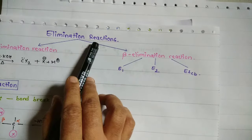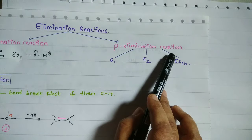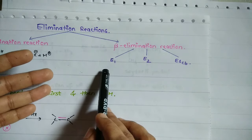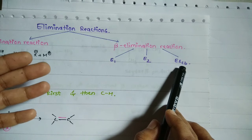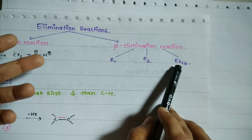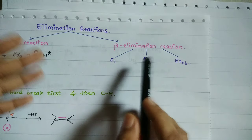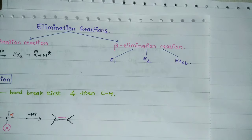When we are dealing with elimination reactions, specifically beta elimination, it will be classified into mainly three parts: E1 reaction, E2 reaction, and E1 conjugate base reaction. All three types totally depend upon their mechanism path, and to differentiate E1, E2, and E1 conjugate base, we have to follow certain rules.